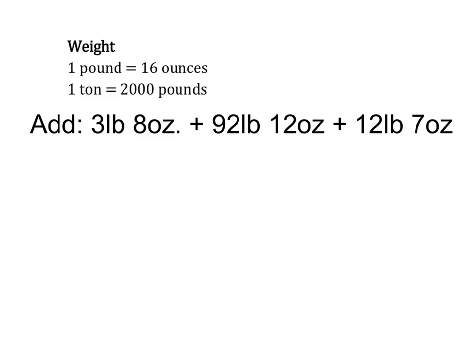to 92 pounds 12 ounces and 12 pounds 7 ounces. Now one thing we need to remember here at the top is that one pound is the same as 16 ounces. So when we add these, just like we did with one of those time problems,